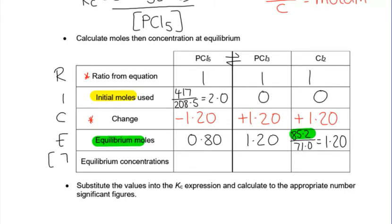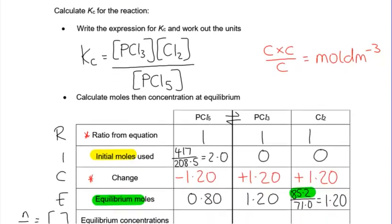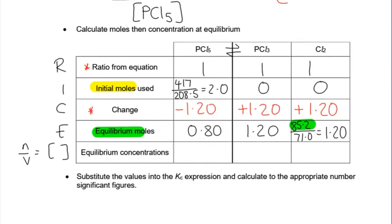And now comes find concentrations. Remember that concentrations is moles over volume. They're all in the same container and the container has a volume of 20 dm³. It's already in dm³. So we're just going to take it and divide by 20. So 0.8 over 20, 0.04. 1.2 over 20, 0.06. 1.2 over 20, 0.06. Put those into your expression for Kc and work me out an answer.